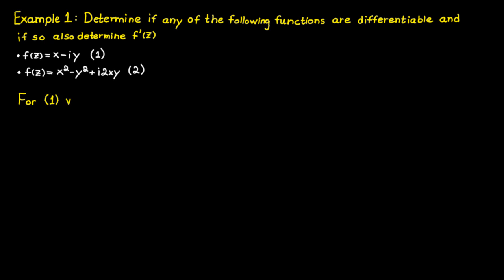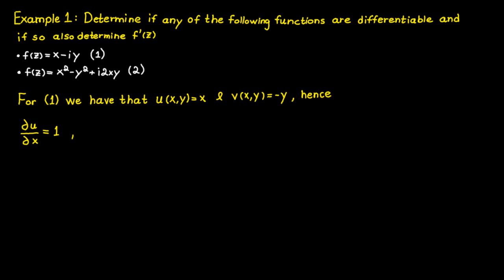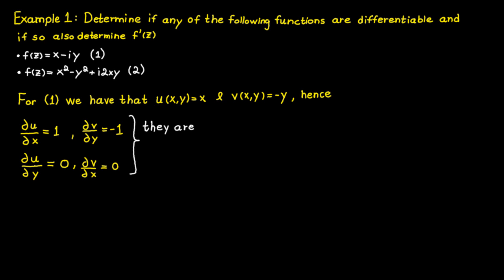For the first function, we have that u, which corresponds to the real part of f, is equal to x. And v, which corresponds to the imaginary part of f, is equal to minus y, which means the partial derivatives become the following. Just remember that the variable you are not deriving with respect to is regarded as a constant. We can see that all the partial derivatives are continuous, and they are continuous in the whole complex plane.